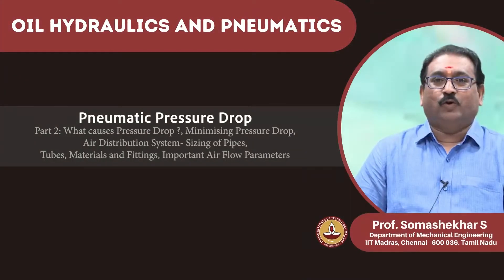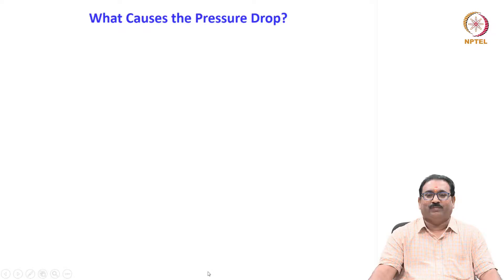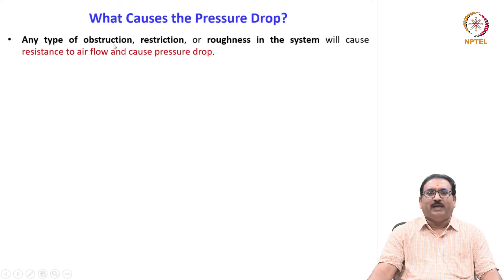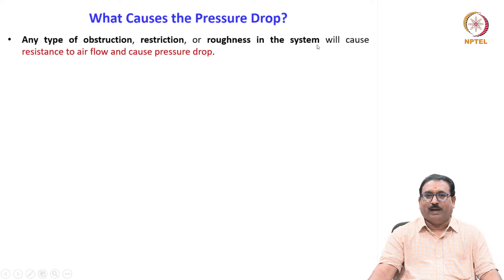My name is Soma Shekar, course faculty for this course. Now you know the significance of pressure drop. What causes the pressure drop? Any type of obstruction, restriction or roughness in the system, piping and tubing will cause resistance to air flow and results in pressure drop.